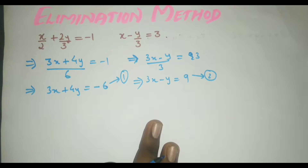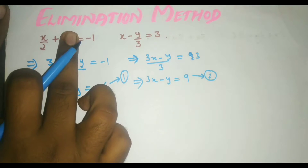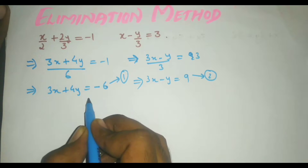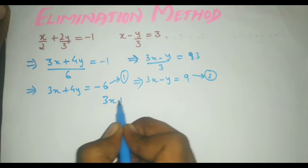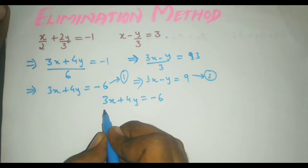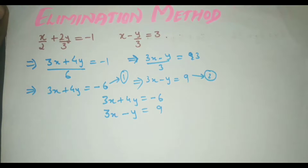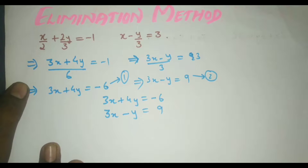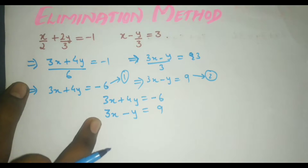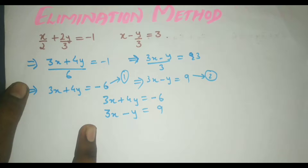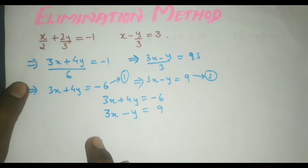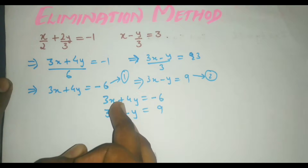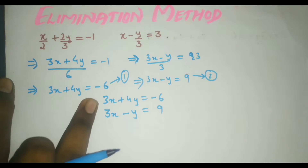Using these two equations, we apply the elimination method to find the values of x and y. The name says it all — we have to eliminate some terms. Writing the equations: 3x plus 4y equal to minus 6, and the second equation equal to 9. You can see 3x and 3x are the same, so you can subtract to cancel them out, since 3x minus 3x equals zero.